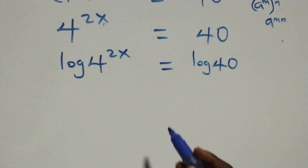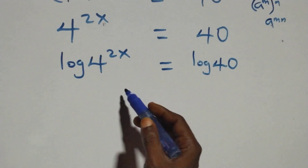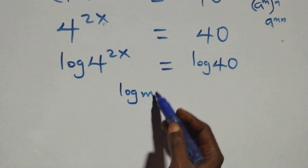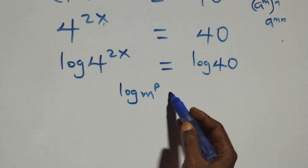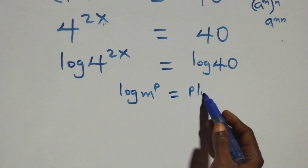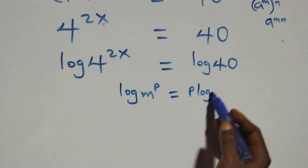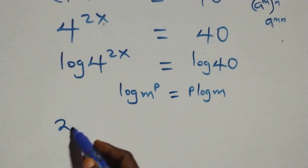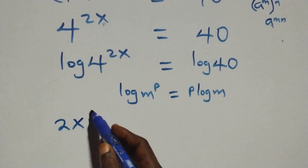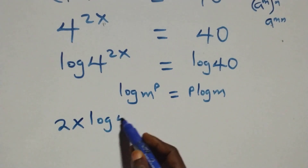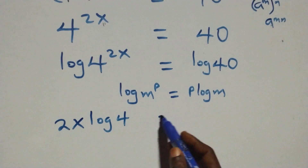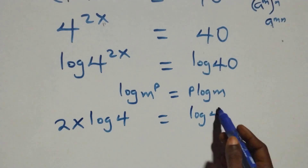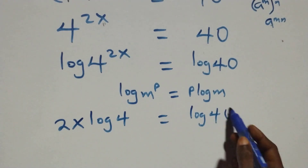Then here, we apply the power rule of logarithms. When we have log of n raised to power p, this is the same thing as p times log n. And this here becomes 2x·log 4 equals log 40 on this side.